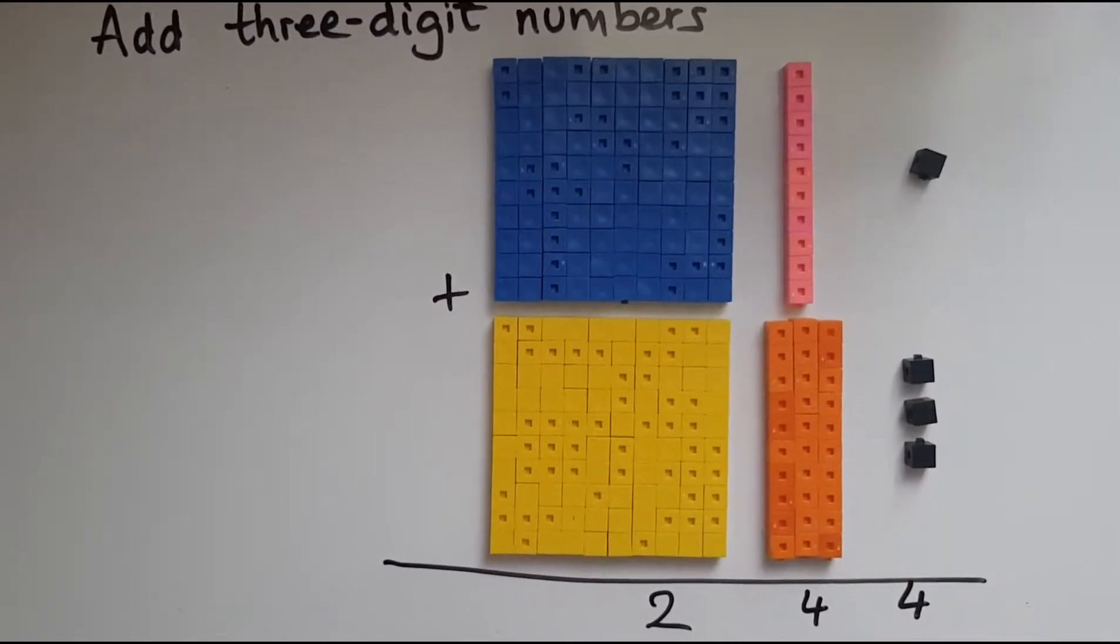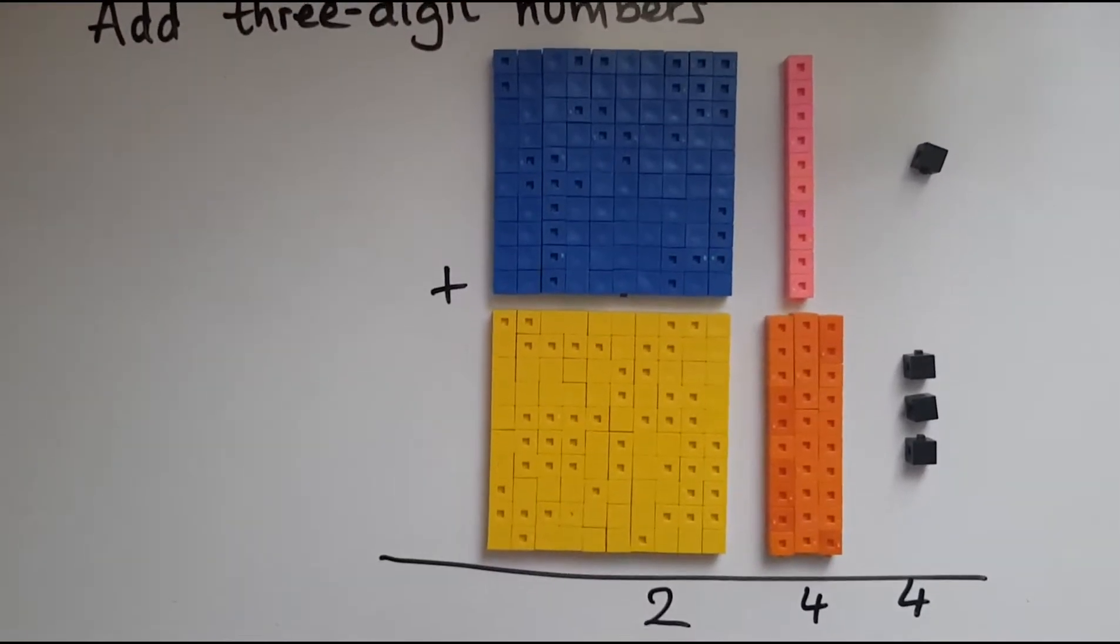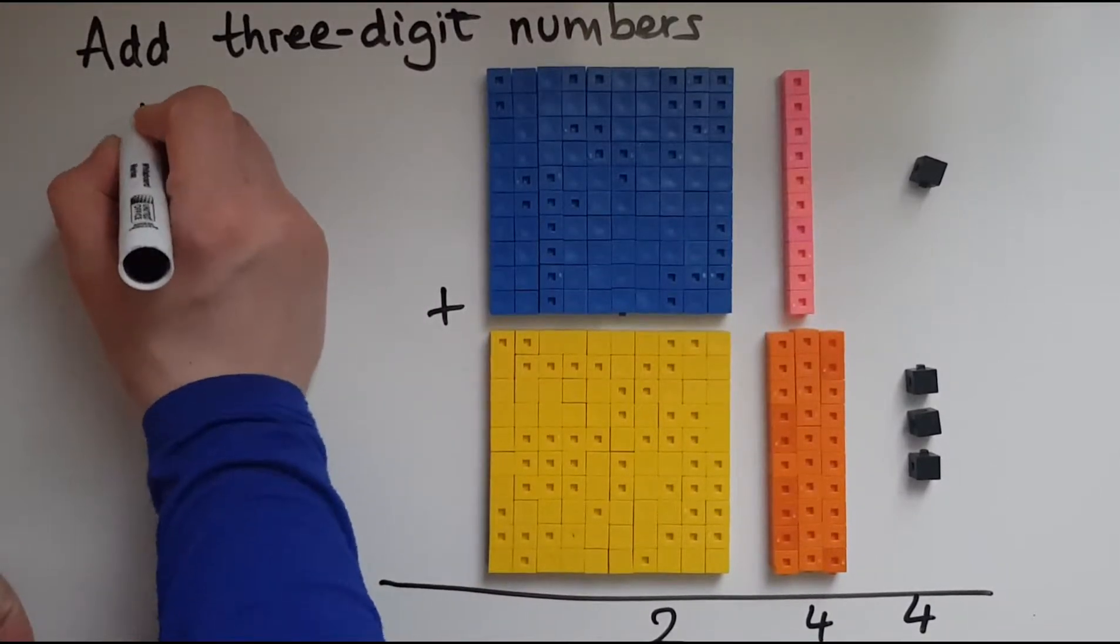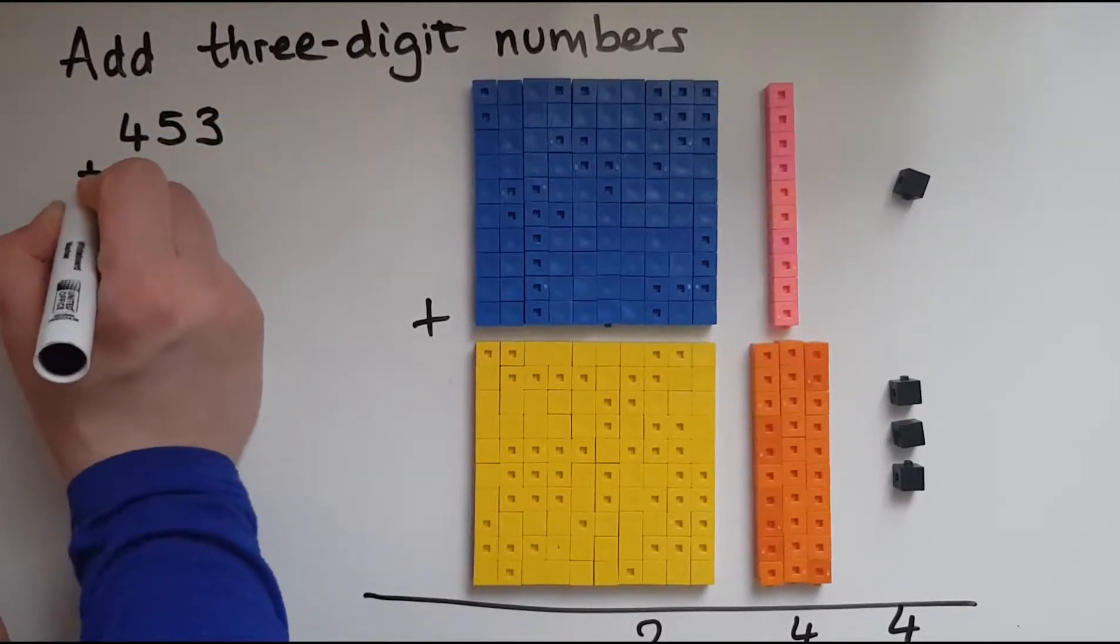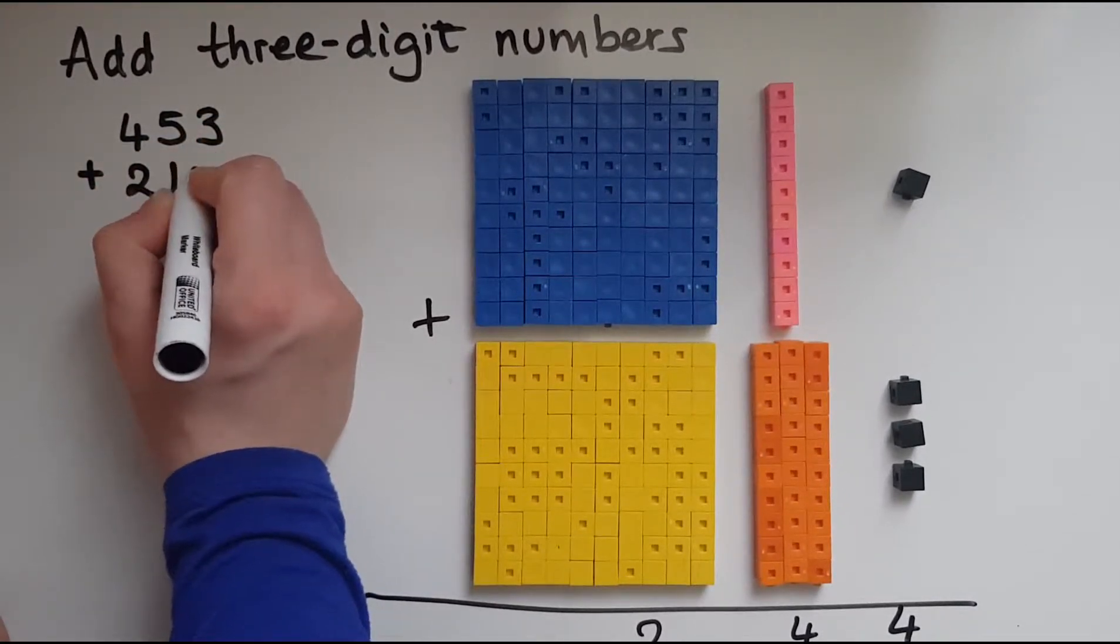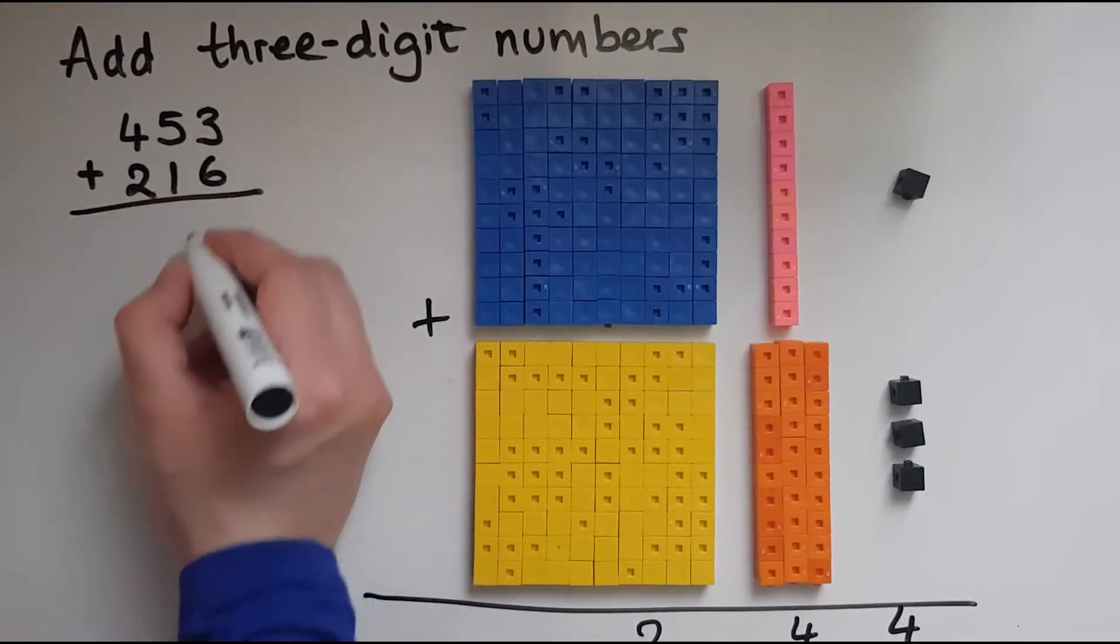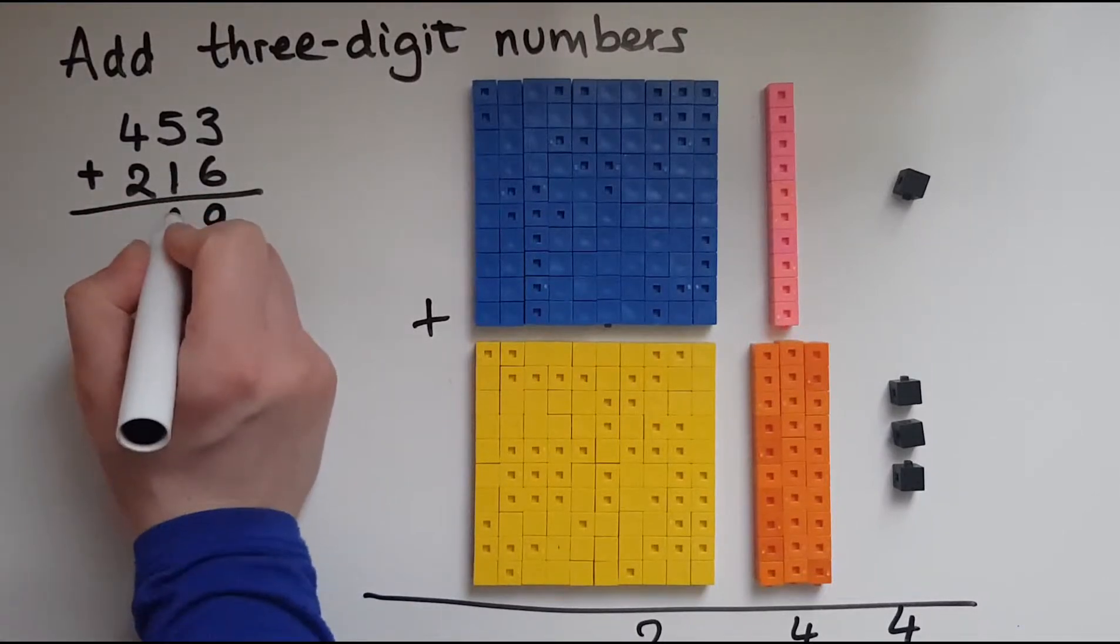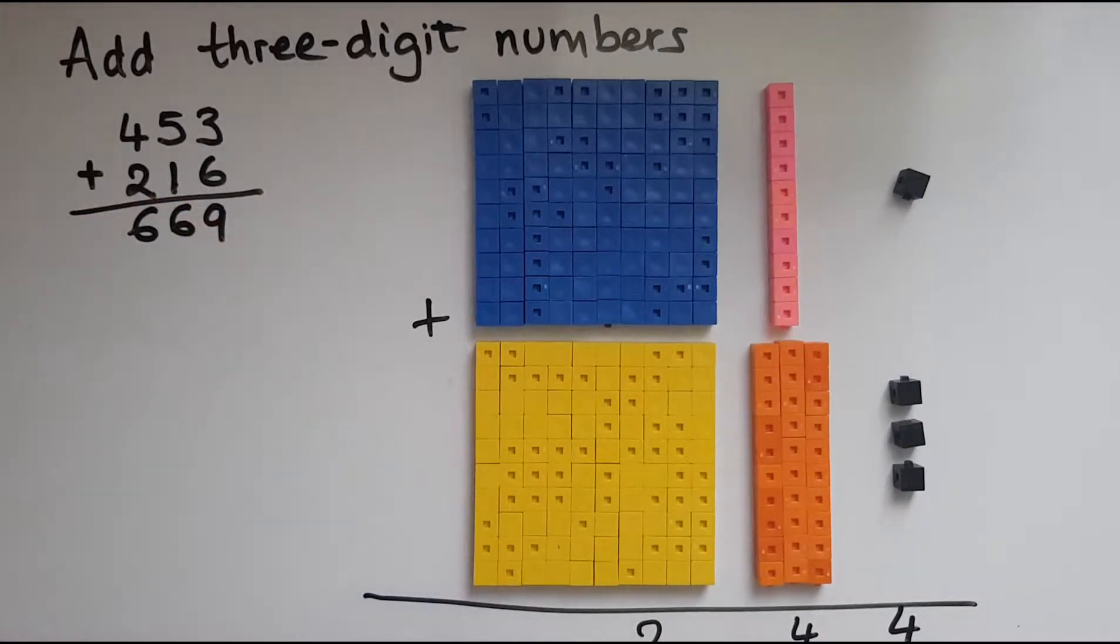So I'll illustrate with another example what I just did, this time using the digits. So let's say I've got 453 and I'm going to add to it 216. So I've got three and six makes nine, five and one makes six, four and two makes six. So that is 669.